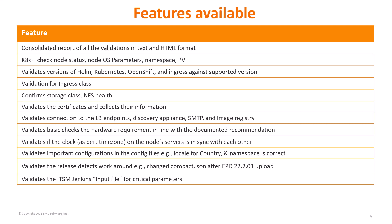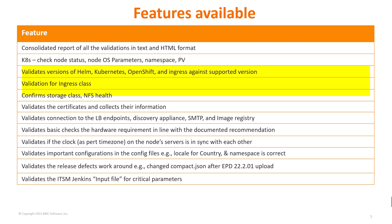This slide covers the features available with the health check tool. When those three options are executed, the tool reports all validation errors and warnings in both text and HTML format in a summarized, single consolidated report. During validations the tool covers: Kubernetes version, OS parameters, namespace, persistent volume, node status, versions of Helm, Kubernetes, OpenShift, and Ingress against supported versions per documentation, Ingress class, storage class, NFS health, certificates, connection checks to various load balancer endpoints, discovery appliance, SMTP, integrated servers like the image registry, NS lookup, and URL checks.